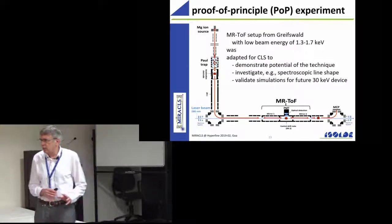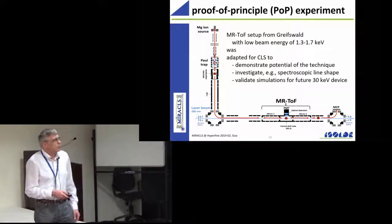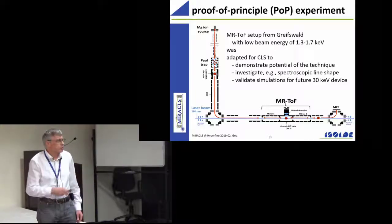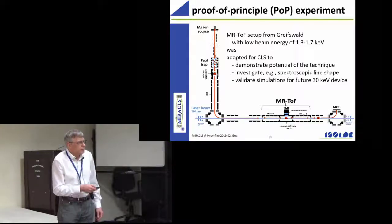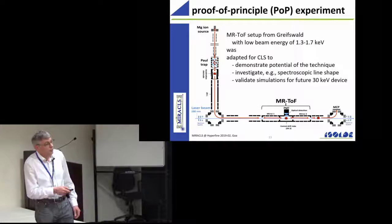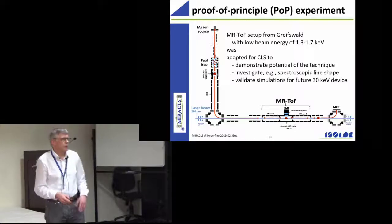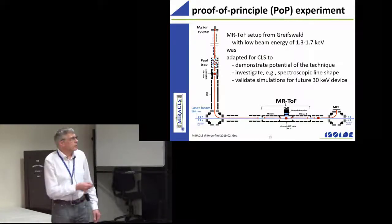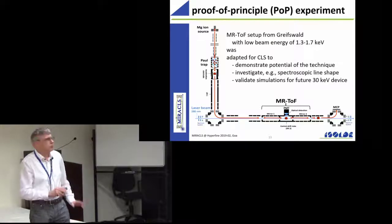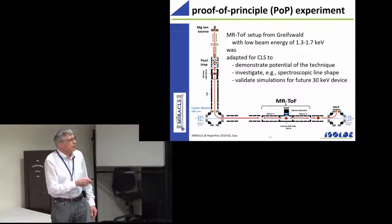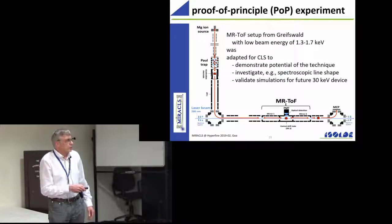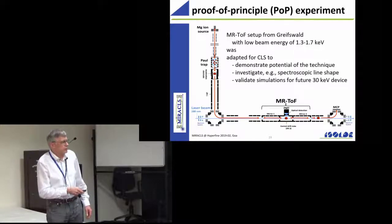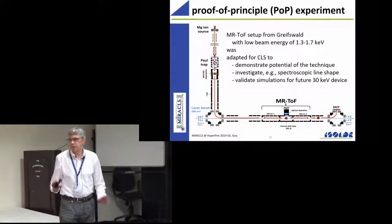This is a proof of principle experiment which we set up at Geneva. The multi-reflection time of flight instrument was built for different purposes at Greifswald and was remodeled. And here we have magnesium, stable magnesium. This is all not online, this is offline. So we do a bunching in a radio frequency trap and then go through a bender. Then the collinear laser comes in through here for the actual measurements.